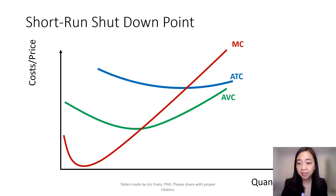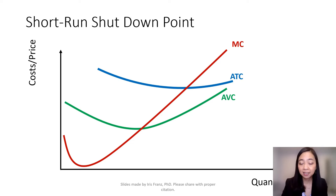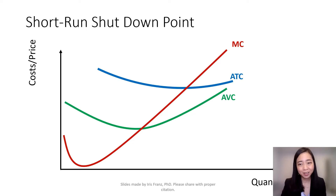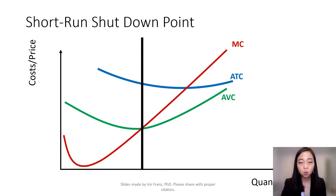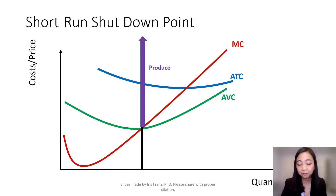Here is a cost structure of a perfectly competitive firm. And at the lowest point of average variable cost, we can cut it. Notice that whenever the price is higher than the average variable cost, we will produce.